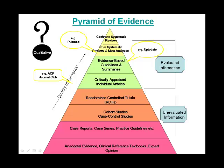The highest level of evidence can be found at the top of the pyramid — for example, systematic reviews — whilst the unevaluated information can be found at the lower end of the pyramid, for example case reports. This is only a guide and individual resources must be assessed in their own right and on their ability to answer the focused question.